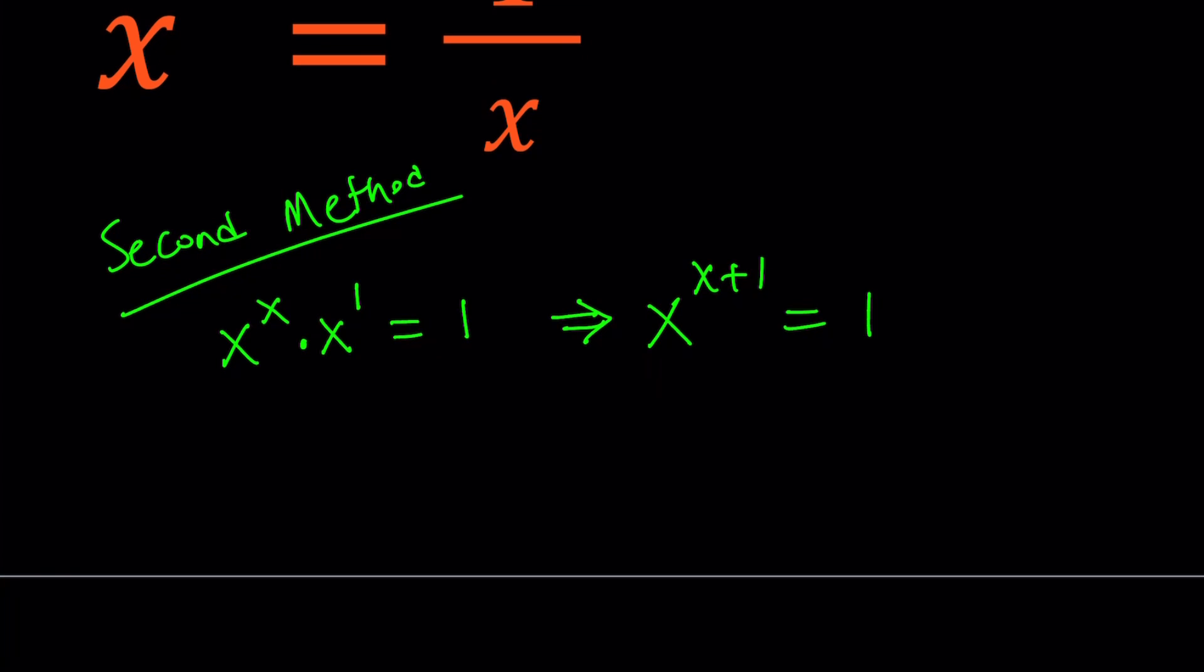Now we do have a situation where we have a to the power b equals 1. So we're going to go ahead and take a look at different possibilities. So if a to the power b is equal to 1, one of the three has to happen. a is not equal to 0, but b is equal to 0, in which case we have a non-zero number raised to the power 0, which is always 1.